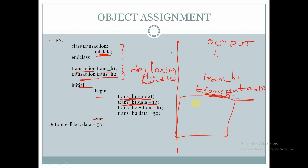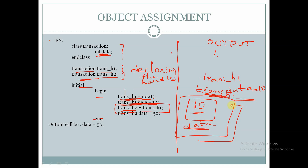In trans_h1, the variable data stores a value of 10. In the next step we are doing object assignment, so the second handle trans_h2 will not have separate memory — it will also be pointing to the same memory pointed by trans_h1. When we try to modify the data using the handle trans_h2 and assign it to 50,